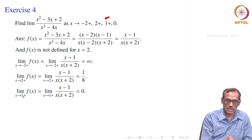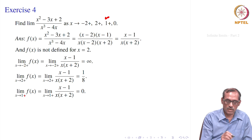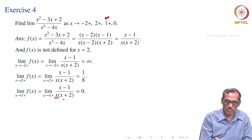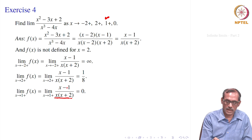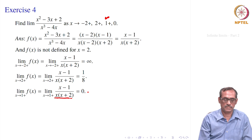For x → 1+, there is no problem in the denominator — x → 1 gives denominator → 1·3 = 3. The numerator limit is 1 - 1 = 0. Therefore the limit is 0.